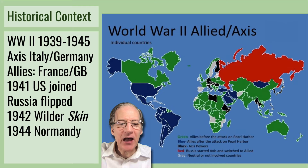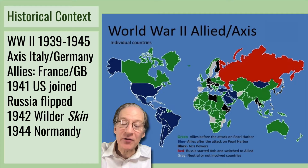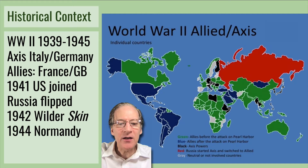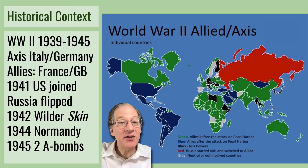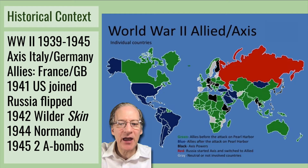In 1944, the Allies stormed the beaches at Normandy and started putting the Nazis on the defensive. About a year later, Hitler committed suicide in his bunker. About a week after that, the Axis forces surrendered in Europe. In 1945, a few months after the surrender in Europe, the war in the Pacific ended when America dropped two atomic bombs on Japan, and shortly after that they surrendered.